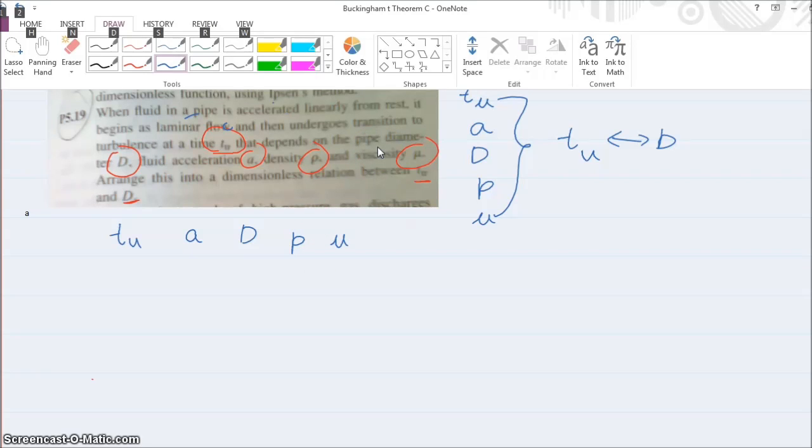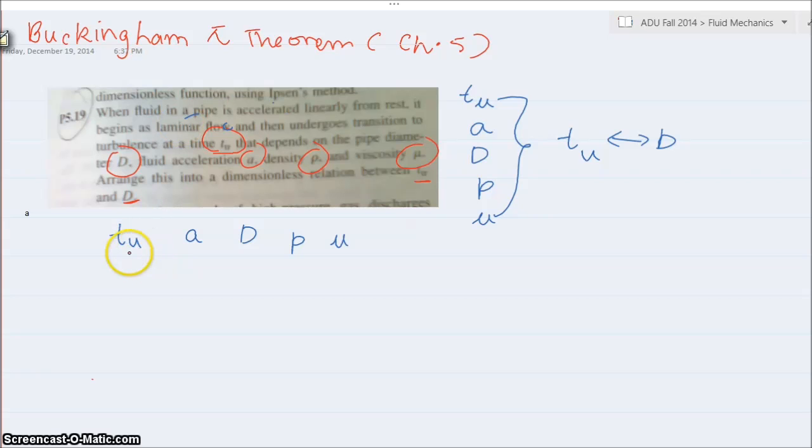So back to topic we were discussing about all the unknowns we have in our equations, which is T_u, acceleration, time, diameter, rho, and mu. So we have the dimension of time is time. Acceleration is meters per second square, so it's like length over time square. Diameter is length, and rho is kilograms per meter cube, which is mass over length cube, and we have mu, which is mass, kilogram per meter second, so length and time.